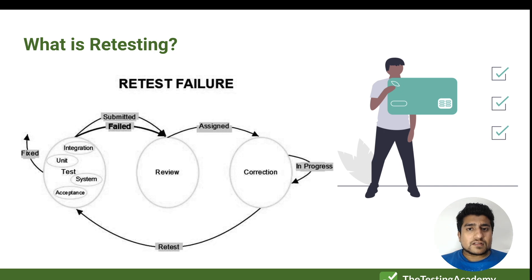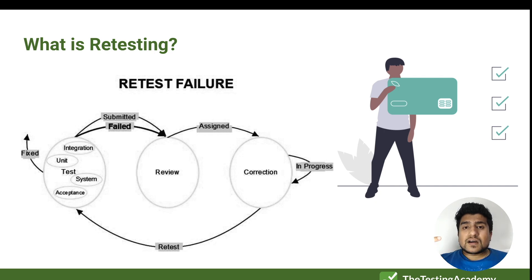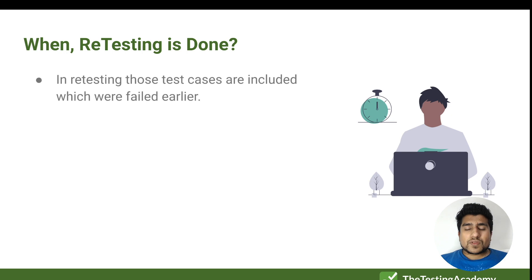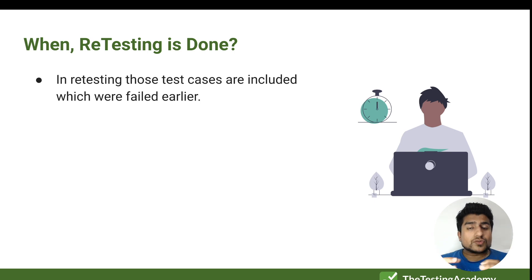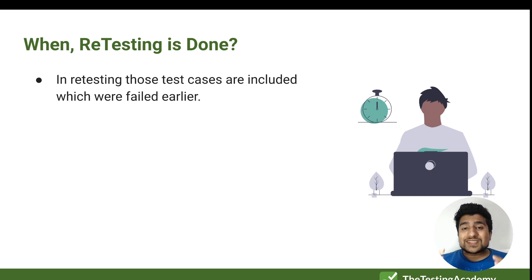In the software testing lifecycle, whenever any kind of bug or issue is found, you have to retest the functionality to confirm whether it is working or not. When should we do retesting? This is very important — lots of times people will try to confuse you with regression and retesting, but here is the answer.